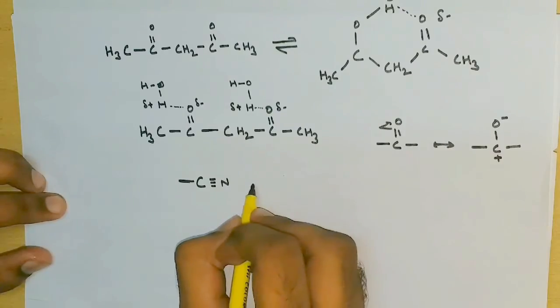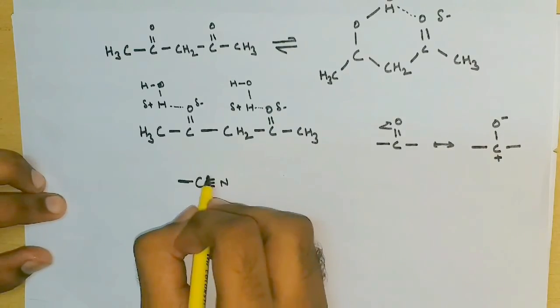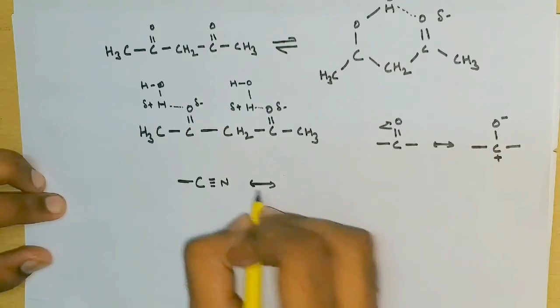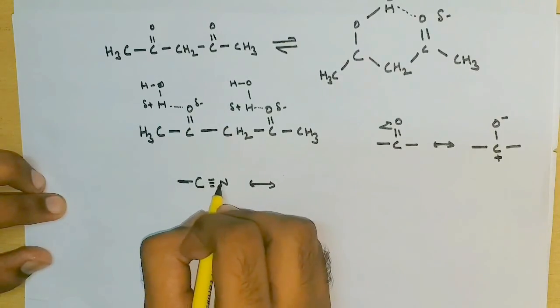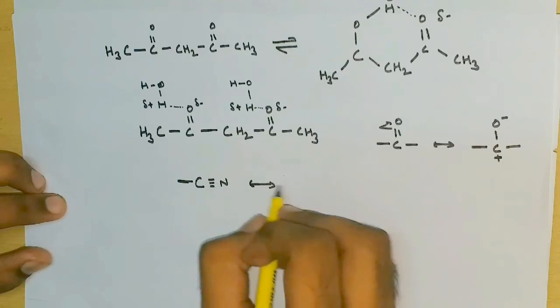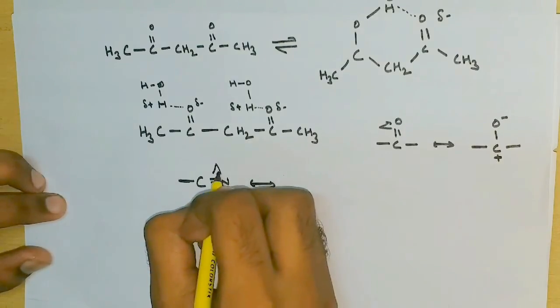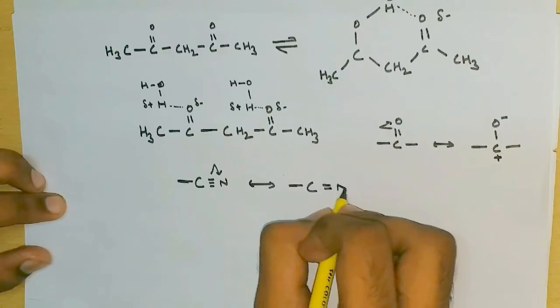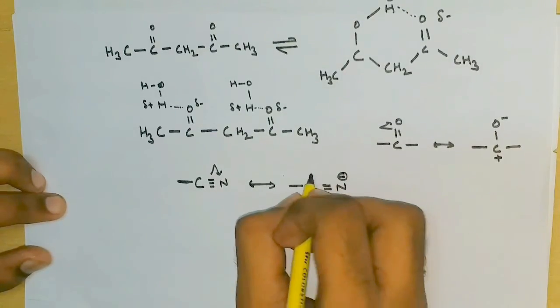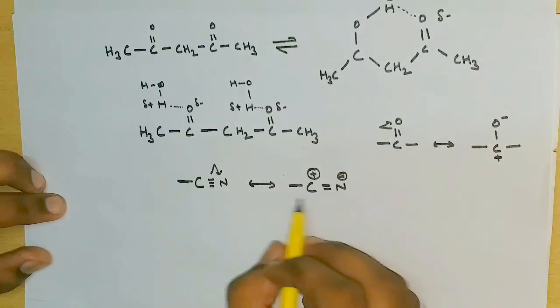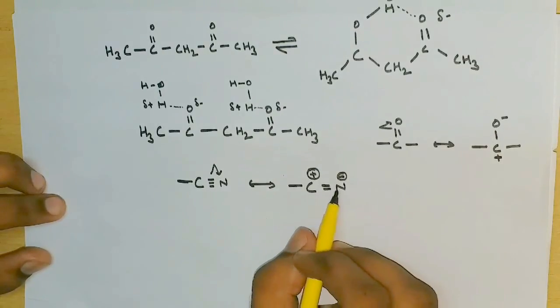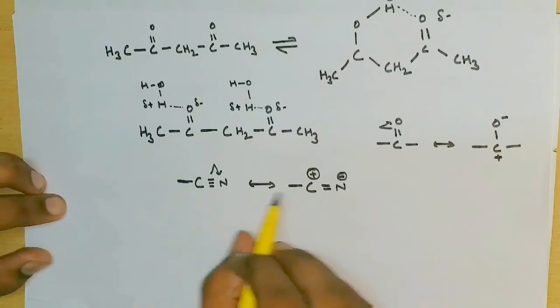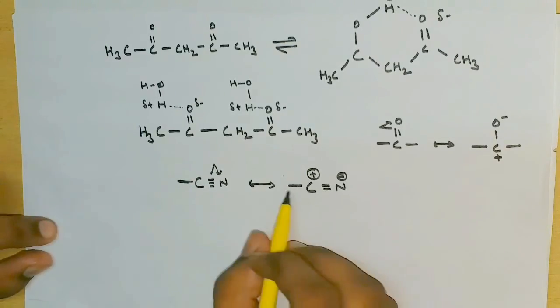Same as the case in cyanide or cyanide group, there is resonance in the triple bond, and the second resonating structure can be drawn as shown. So this functional group also has two opposite charges.